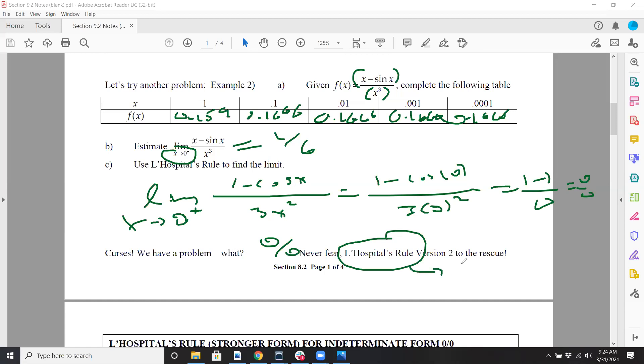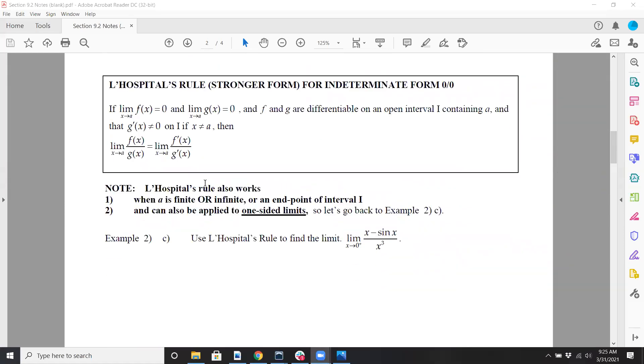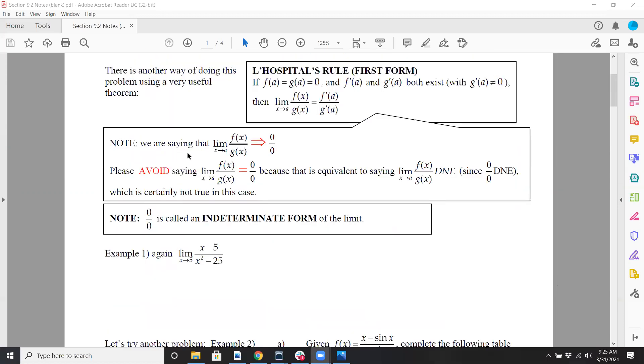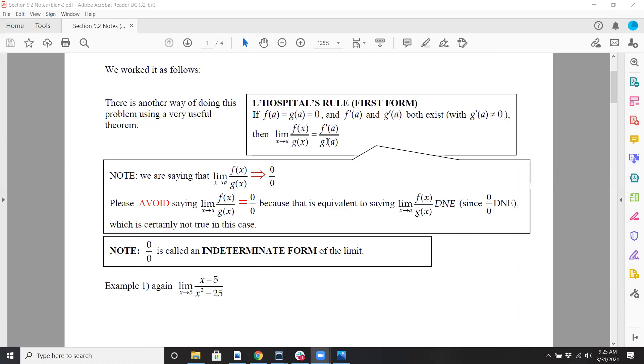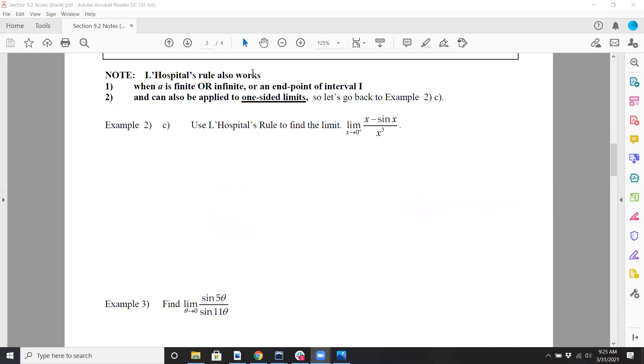But here's the thing. This is version 2, which means you do it again. You do L'Hôpital's rule again on this part right here. So you want to do now a second derivative. If you've got to do a third, fourth, fifth, sixth derivative, I don't care. You keep doing it until you get it to work. So we call it the stronger form of L'Hôpital's rule. If the limit of each of these is 0 and they're differentiable, because you've got to be able to take the derivative, and you want to make sure the derivative of g is not 0, because that's a denominator, then just feel free to just keep doing it over and over and over again.